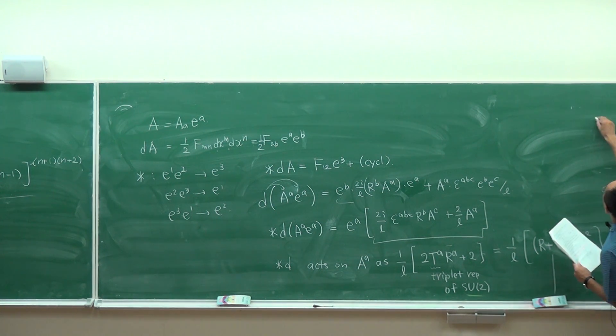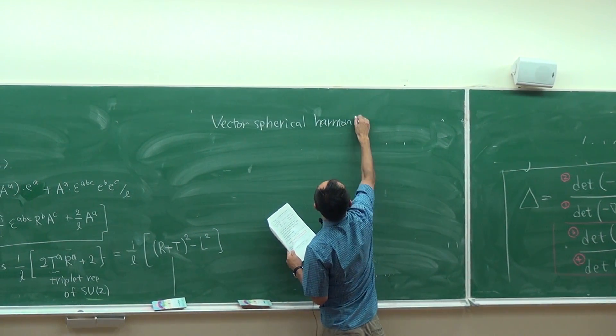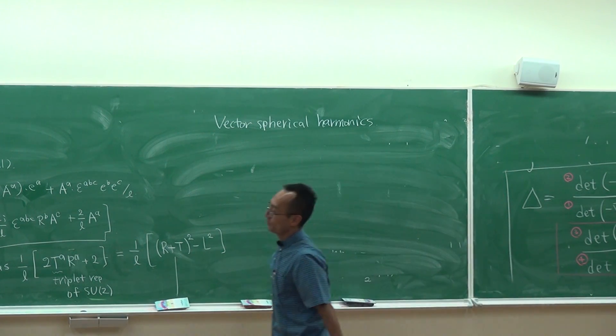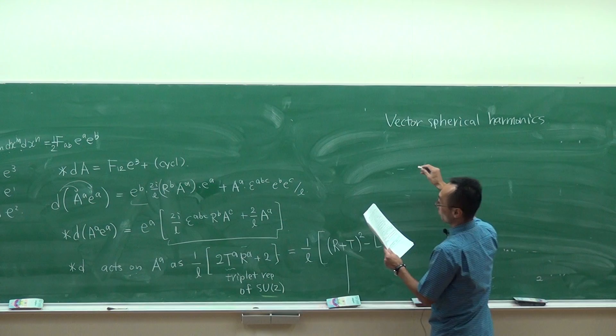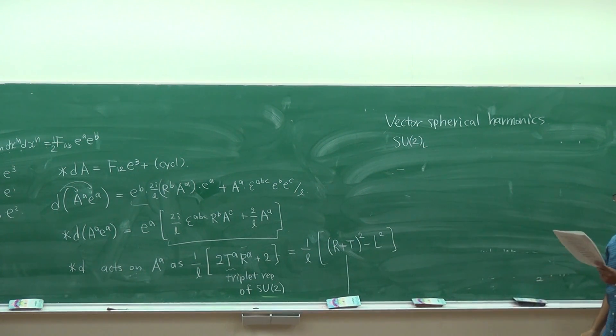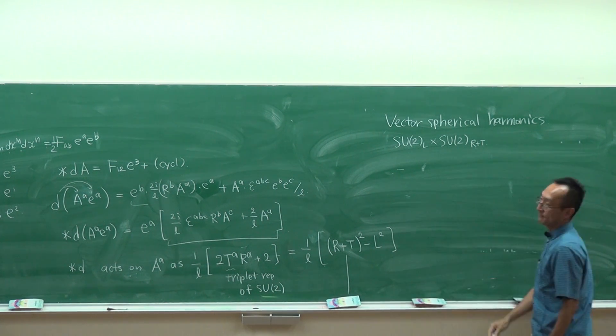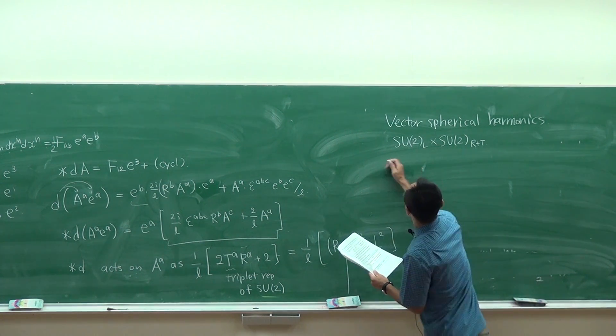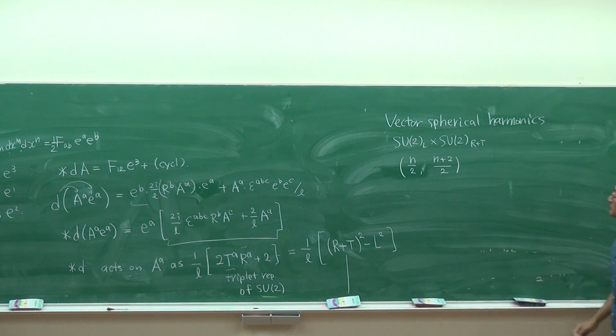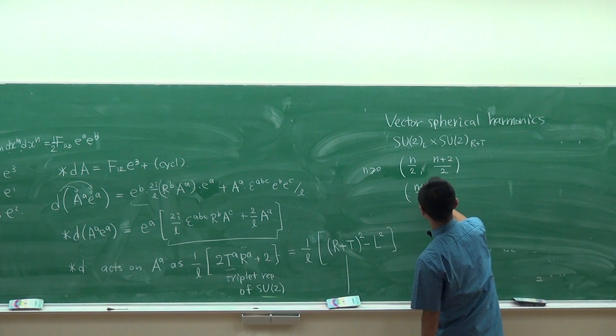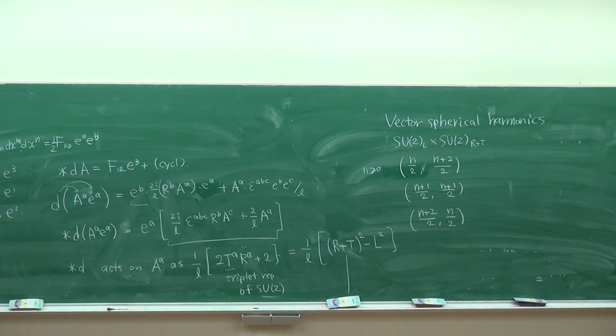If you know enough about the representation theory of SU(2), you can compute the determinant of this operator. This expression can be further rewritten like this. Now let me talk about the vector spherical harmonics. The vector operator on the round sphere goes into the representation of two copies of SU(2). The first copy is generated by the left Killing vector, and the second copy is generated by the sum of R and T.